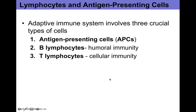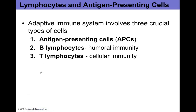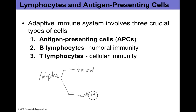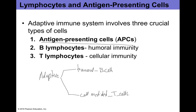To create adaptive immunity, we're talking about two main branches: humoral, produced by B cells, and cell-mediated, produced by T cells. But to have effective immunity, you also need to rely on a specific type of cell called antigen presenting cells, or APCs.